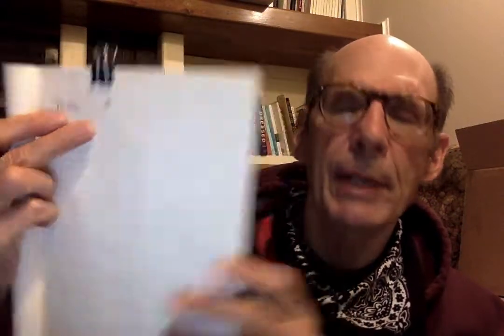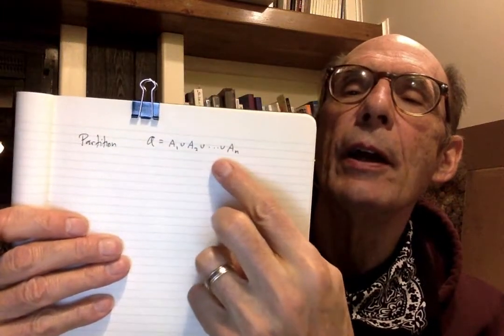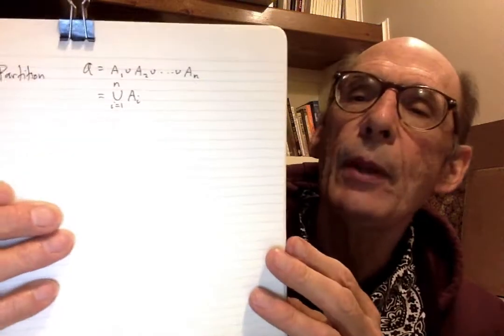The idea of a partition is you have some set A — I'm going to use a script A because it's a big set — and you write A as a union of subsets. You could write that out in roster notation with N of them, or use the modified summation notation: the union i equals 1 to N of the various A sub i's.